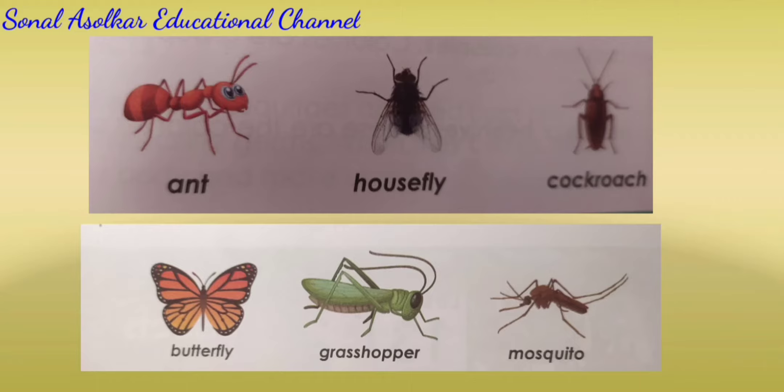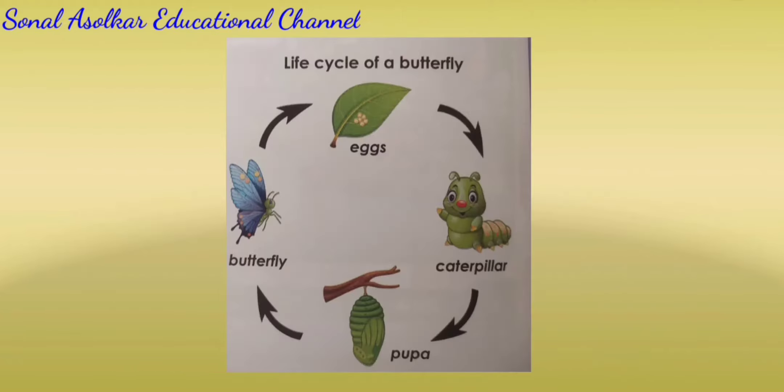Some insects have wings and can fly. For example, a butterfly, bee, mosquito and so on. Ants and termites are examples of insects which cannot fly. Many insects have different stages in their lives. When they hatch from the egg, they look different. They change their shape and size many times before they become fully grown.